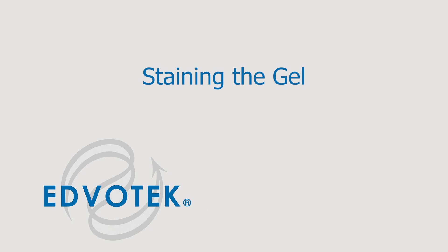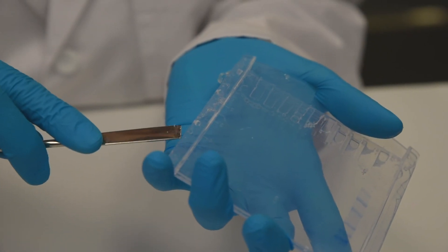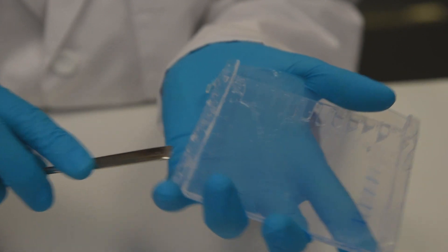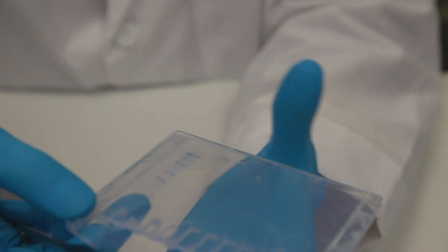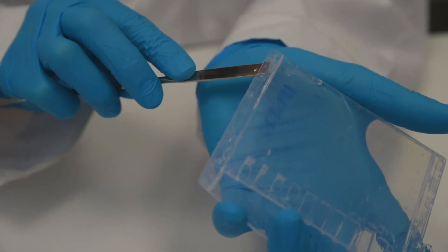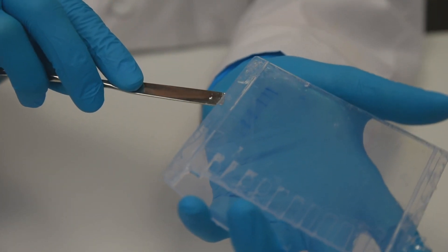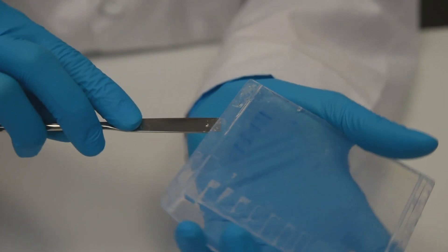Staining the gel. Step 1: After electrophoresis, lay the cassette down and remove the front plate by placing a thin spatula or screwdriver at the side edge and gently lift it away from the larger back plate. In most cases, the gel will stay on the back plate.